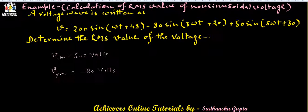Actually, it is V3m because here we have 3 omega t, and the value of V5m is 50 volts.